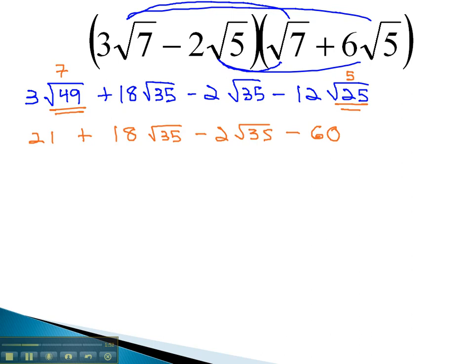As usual, we always want to combine like terms. 21 minus 60 is negative 39, and the root 35's are like terms as well. 18 minus 2 gives us 16, root 35. And we have our final solution.